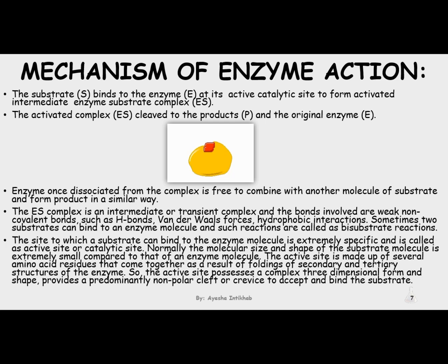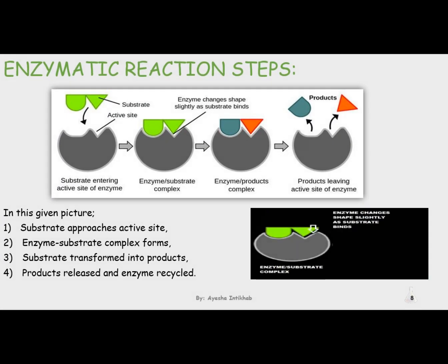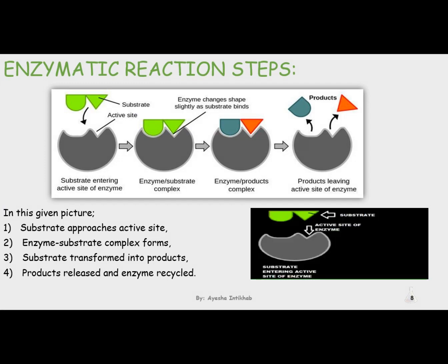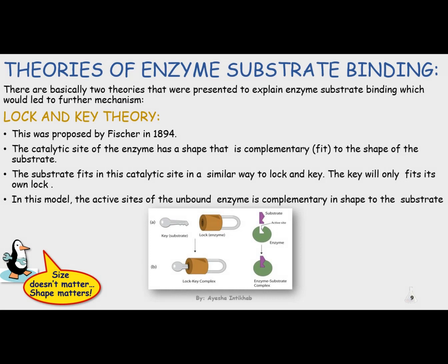Here we learn about the induced fit model and the lock and key phenomena of enzyme action. This process by which the enzyme joins with the substrate and makes a complex is called the lock and key phenomena. There are three places where the substrate can bind in the enzyme, and that binding may be weak or a strong covalent bond. The place on the enzyme where the substrate binds is called the substrate site, the catalytic site, or the active site.